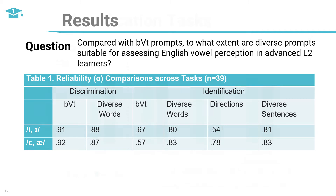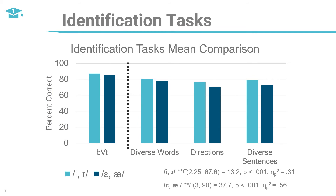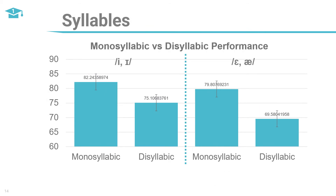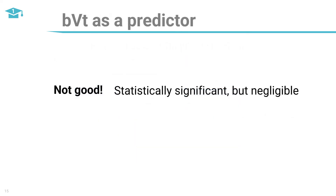Next, checking the means for each task: for identification, I expected that with each step of added complexity we would see a decrease in scores, so participants would perform better on isolated speech prompts than connected speech. Syntactically predictable directions tasks were expected to yield higher scores than diverse sentences. Results generally supported this hypothesis — B-vowel-T boasted the highest scores while more diverse tasks were lower. Participants performed between 7 and 10 percent better with monosyllabic words than disyllabic. Results from the mixed model analysis suggested that B-vowel-T was not a good predictor of performance with sentences — statistically significant, but negligible.